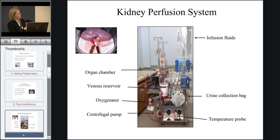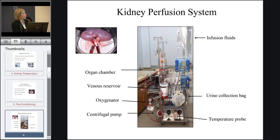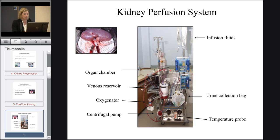This is a picture of our laboratory-based system. The system is based on cardiac bypass technology, and you can see the kidney being perfused in a kidney chamber. Blood goes into the renal artery and out through the renal vein, and the ureter is cannulated. These are the main components of the system highlighted, and I'll go on to talk a little bit more about the system later in the talk.